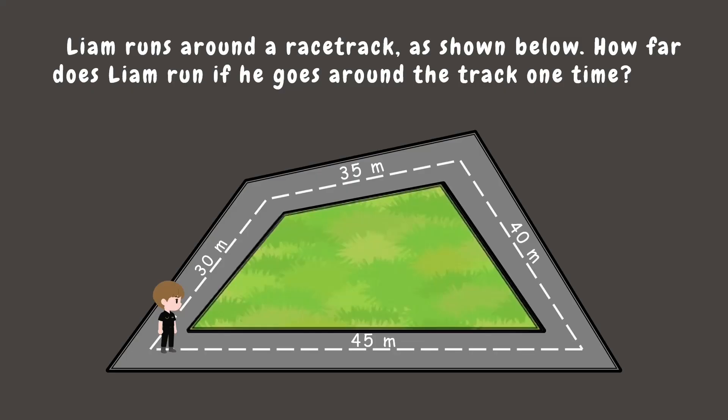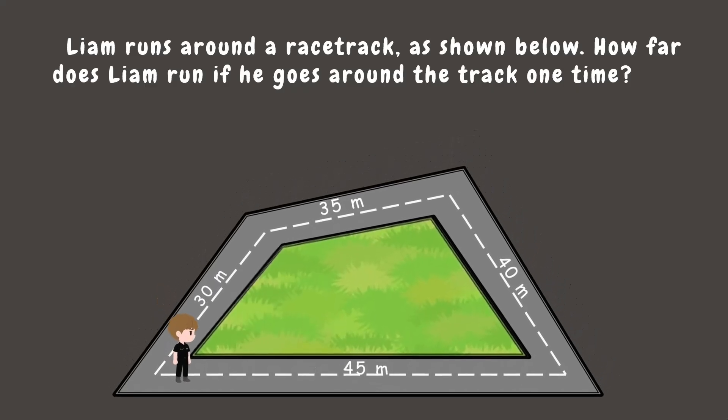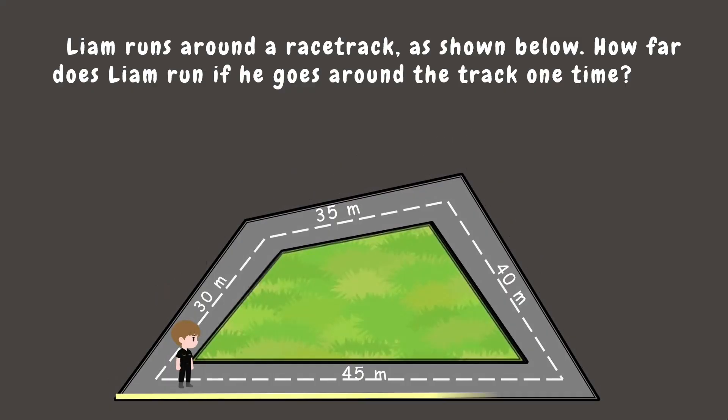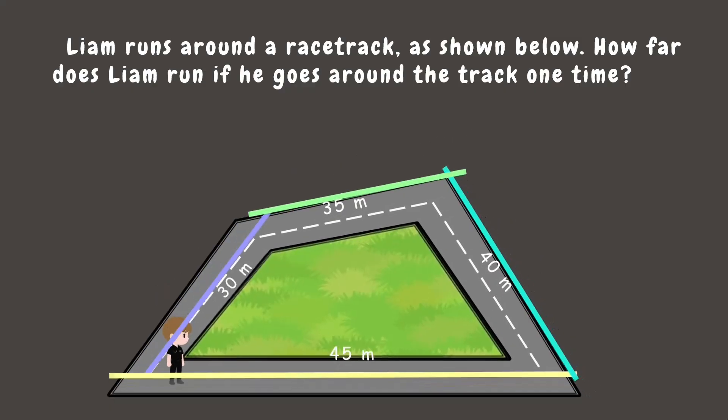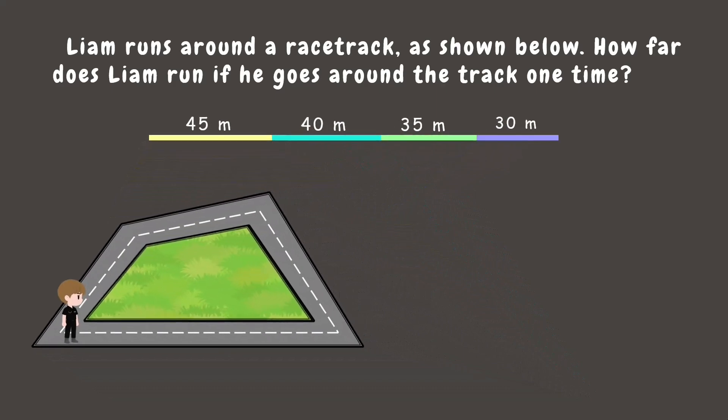To find the answer, we need to add all the sides together. So that would be 45 plus 40 plus 35 plus 30, and that gives us 150 meters. So Liam runs 150 meters around the racetrack. Did you know that this is an example of a perimeter?